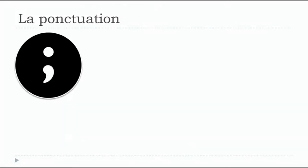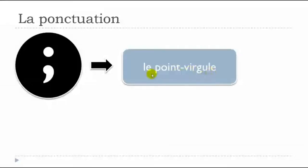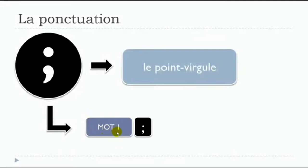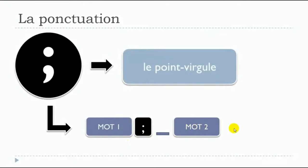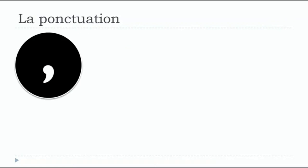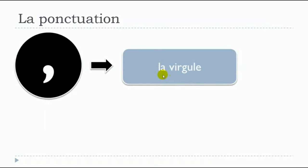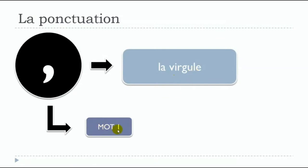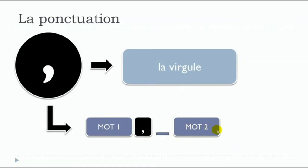Next is le point-virgule — the semicolon. It works like this: your first word or sentence, then le point-virgule without any space before it, then a space, and the next word or rest of the sentence. Then la virgule — the comma — works the same way: first word, then la virgule without any space before it, then a space, and the rest of the sentence. Nothing before, one space after.